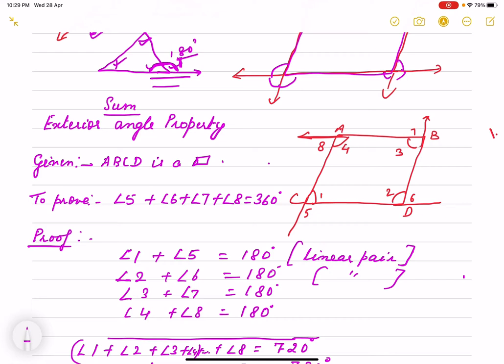Again we have done already that sum of interior angles is 360 in a quadrilateral. Now what is the sum of exterior angle? Outside any angle is formed. So what is the sum of those angles? Here I am explaining.